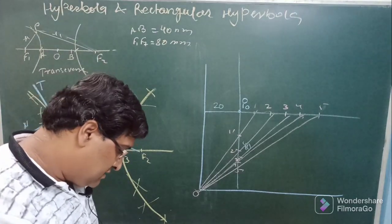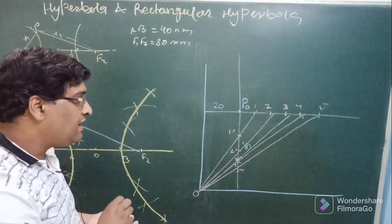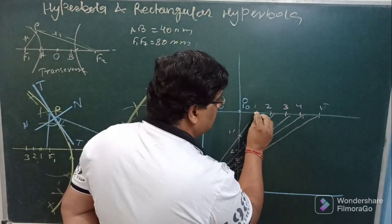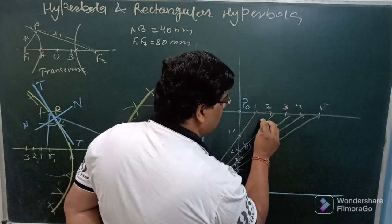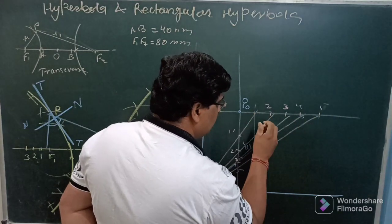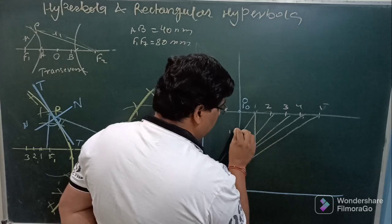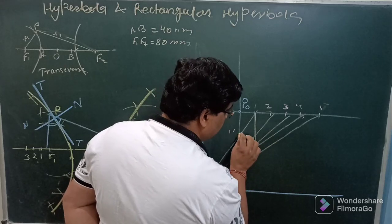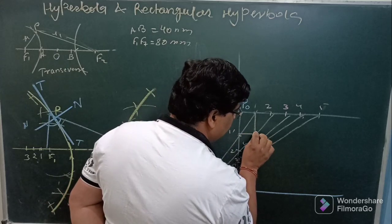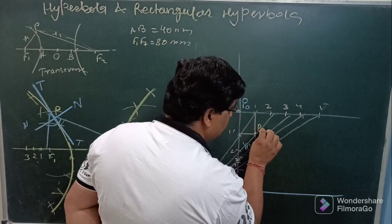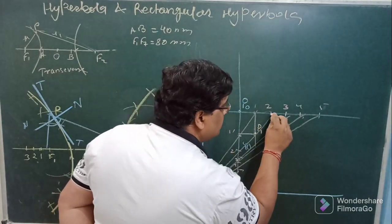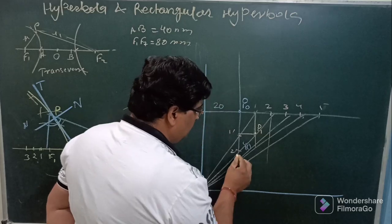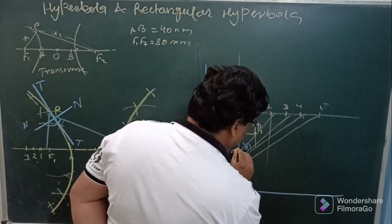These lines are cutting this vertical line at some points like this is 1 dash, this is 2 dash, 3 dash, 4 dash and 5 dash. The next step is draw horizontal and vertical lines from these points. From 1, 2, 3, 4, 5 drop the vertical line. Then from this 1 dash, 2 dash, 3 dash drop the horizontal line. They will intersect at some point. This will be p1. Then from 2 vertical line, then from 2 dash horizontal line, you are getting p2.